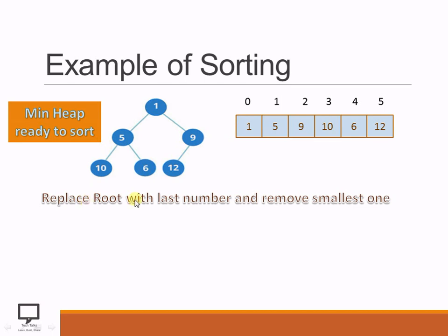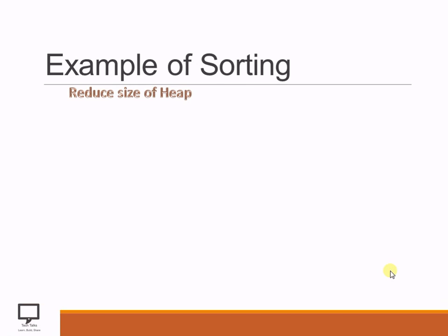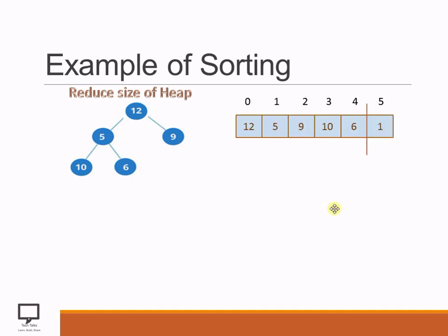After swapping, 12 is at the 0th position and 1 is at the last position. You can see that 1 is the smallest element and has secured its own position. Now we reduce the size of the heap, considering only 5 values from index 0 to 4. The 6th value is already sorted and will no longer be considered. With only 5 values remaining in the min heap, we check whether this is still a min heap — it is not, it is only a complete binary tree.